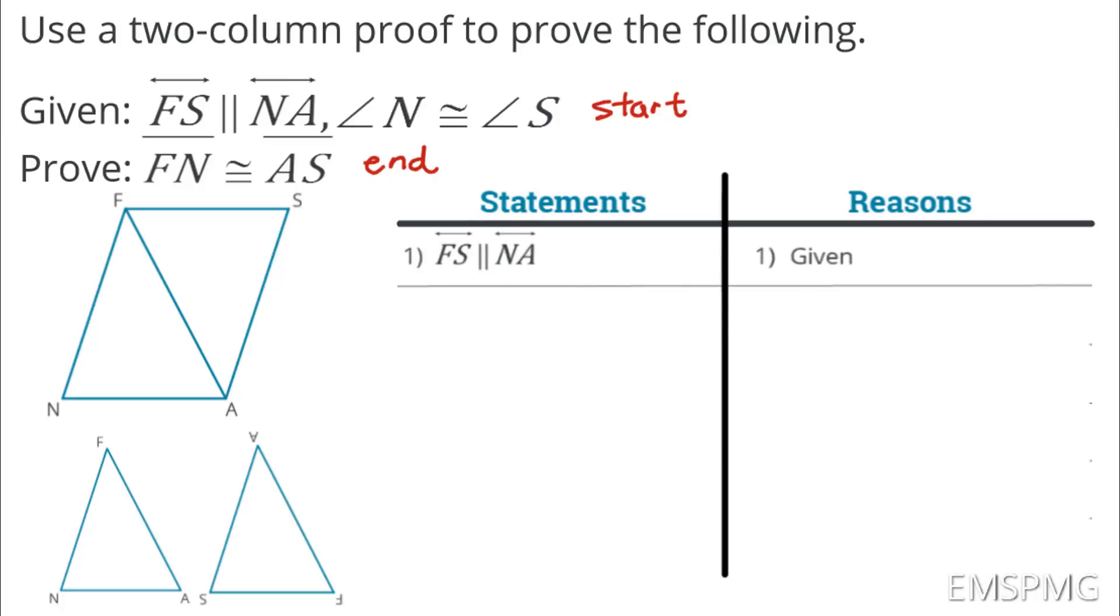Now, this is saying lines are parallel. Always, always make sure you're labeling your diagram. So, I'm saying that FS is parallel. Again, this is the arrow, not the dash. Parallels use those arrows. These are parallel to NA, so we know that those are going to be parallel.